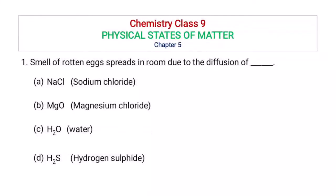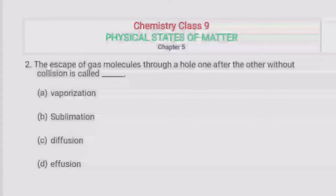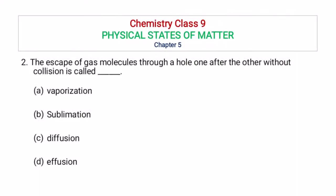MCQ: The smell of rotten eggs spreads in the room due to the diffusion of — sodium chloride, magnesium chloride, water, or hydrogen sulfide? The correct option is hydrogen sulfide. The escape of gas molecules through a hole one after the other without collision is called — vaporization, sublimation, diffusion, or effusion? The correct option is effusion.